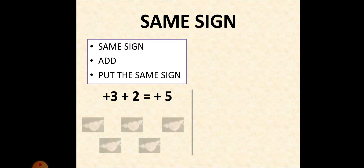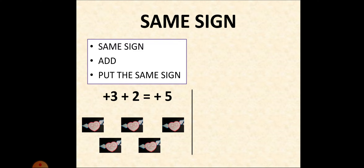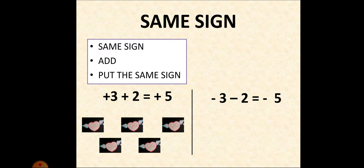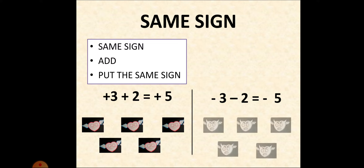Let's see the graphical view. We have assigned positives as heroes, so we have three heroes and two heroes. When three and two heroes combine, they make plus five — three heroes and two heroes becomes five heroes. Similarly, minus three minus two: same sign, we add three and two to get five, and as the same sign is minus, we get minus five. We can see three villains and two villains — in total, five villains. Remember: same sign, we add and put the same sign only.